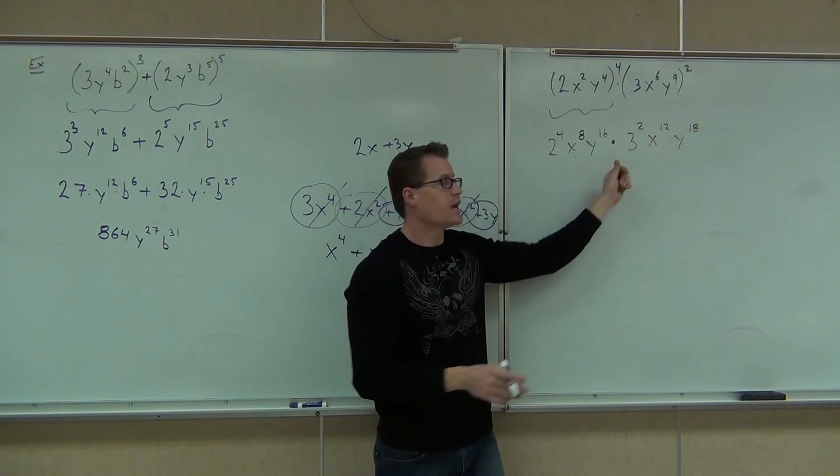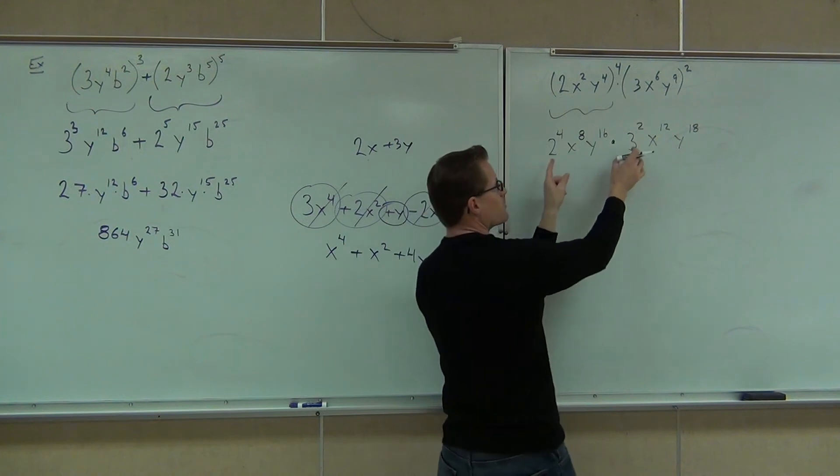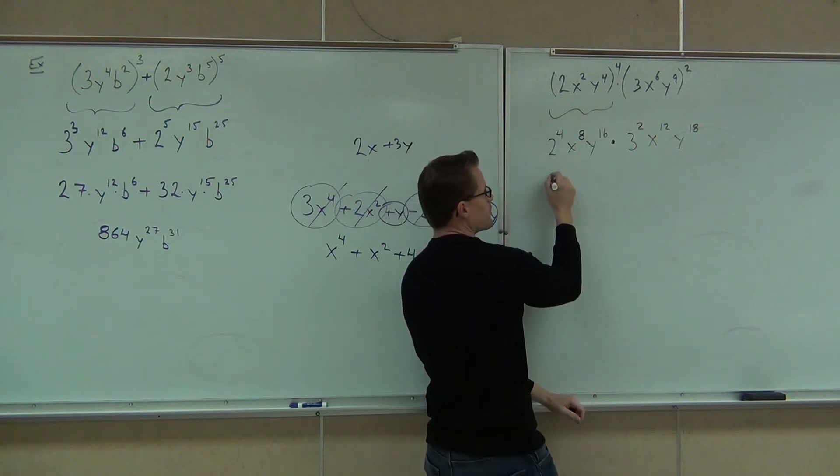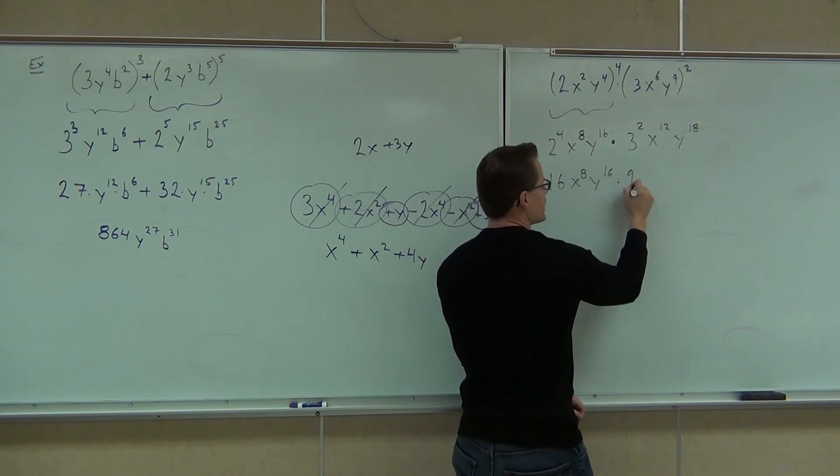But since we're multiplying, now we can use the fact that we can re-associate, re-commute those. Then you can multiply your numbers and your powers. We better multiply our numbers first. We've got 16 here. We've got 9 over here.